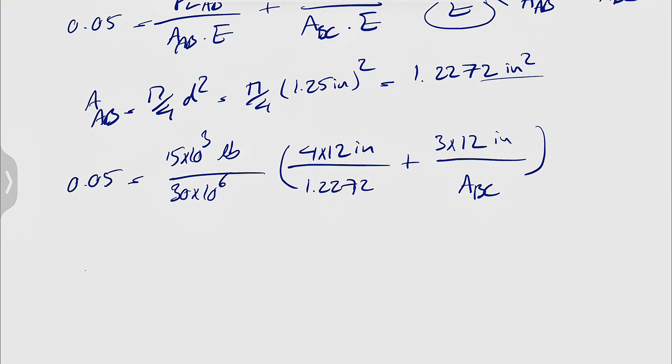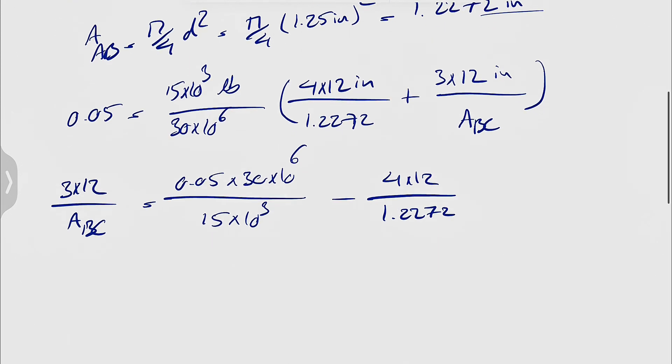Over the area of BC, and the rest of this is solving this equation. So if you want to find ABC, basically have 0.05 times 30, 10 to the 6, over 15, 10 to the 3. Actually, let's keep the left side as it is, so 3 times 12 over ABC will be this, minus 4 times 12 over 1.2272.